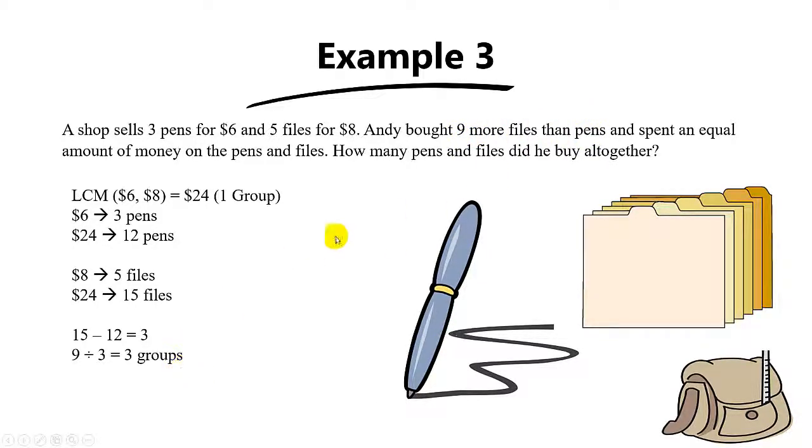Now the question asks for the number of pens and files that Andy bought all together. To do that you need to take 12 plus 15 to find inside one group how many pens and files you have. So this will be the number of items in one group. And since there are 3 groups, the answer is 27 times 3, which is 81 pens and files.